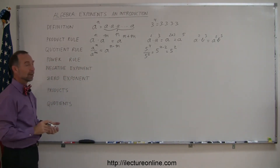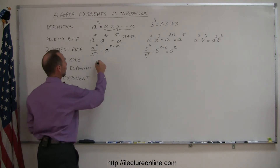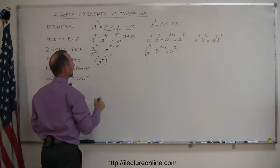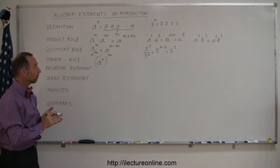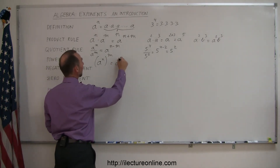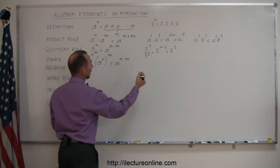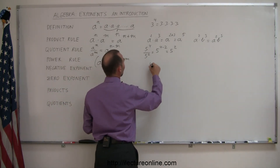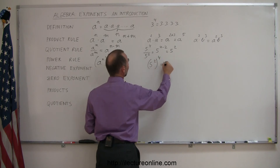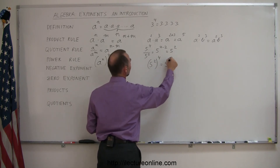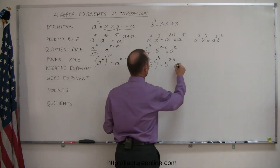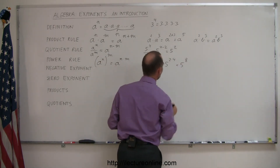Now the power rule. What if we have a to the n power, and the whole thing is raised to the m power? In this case, we're going to multiply the exponents. So this is the same as saying a to the n times m. As an example, if we have 5 to the second power and that's raised to the fourth power, that's equal to 5 to the 2 times 4. So here we multiply the exponents, giving us 5 to the 8 power.